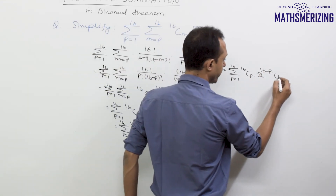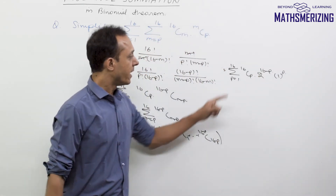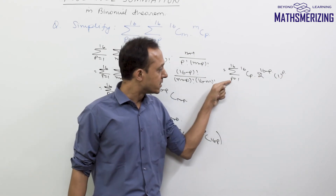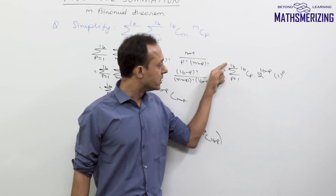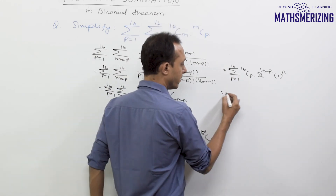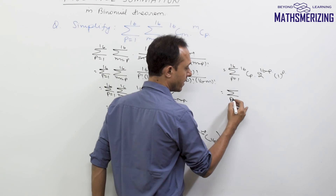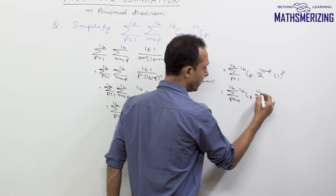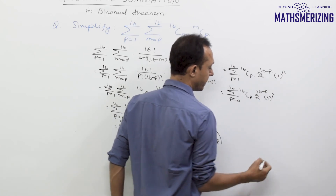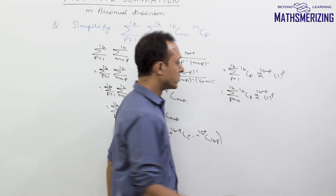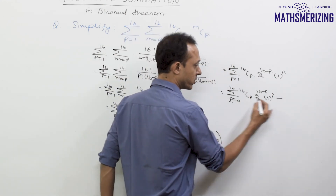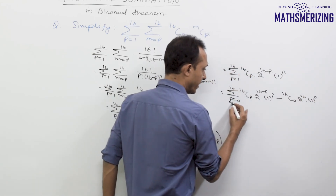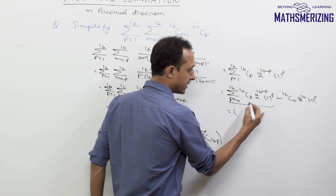I will also write it as 1 to the power p, which is of the form nCr times a to the power (n minus r) times b to the power r. But here the summation starts from 1, and I need it to start from 0. So I will add one more term and subtract it also — starting from p equals 0 to 16: 16Cp times 2 to the power (16 minus p) times 1 to the power p, and then subtracting the term when p equals 0, which is 16C0 times 2 to the power 16 times 1 to the power 0.